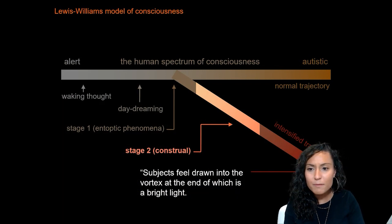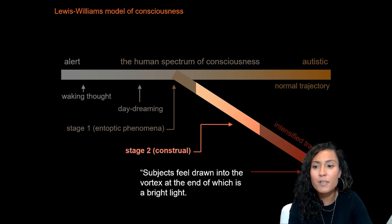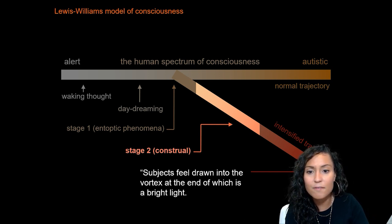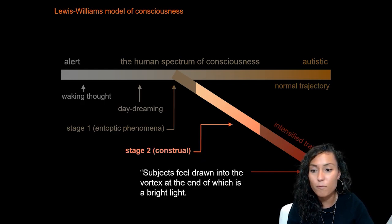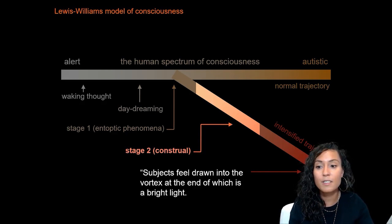Williams describes the second stage as feeling like you are being drawn into a vortex or tunnel at the end of which is a bright light. On the other side of the vortex is a lattice derived from the geometric imagery of stage one, and in the compartments of this lattice are the first true hallucinations of people, animals, and otherworldly beings.